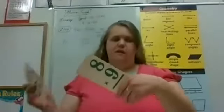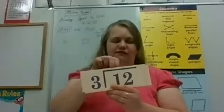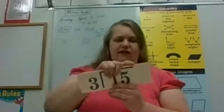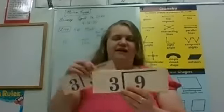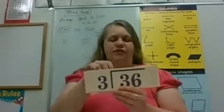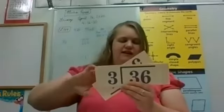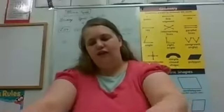45 divided by 5 is 9. 12 divided by 3 is 4. 15 divided by 3 is 5. Good job. 9 divided by 3 is 3. 36 divided by 3 is 12. And last one: 35 divided by 5 is 7. Good job! I hope you got all those — you were on top of that.